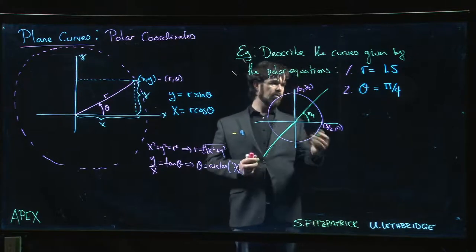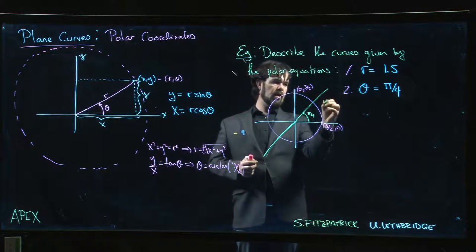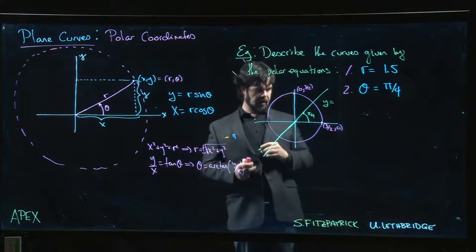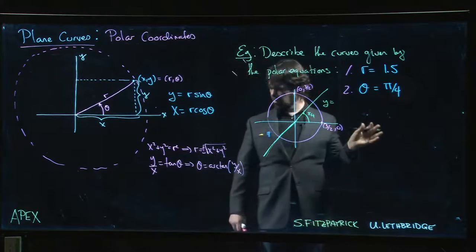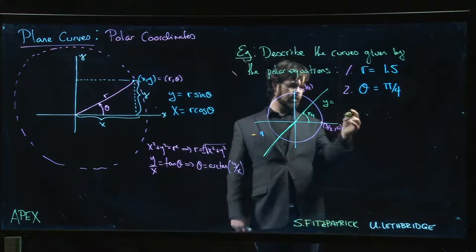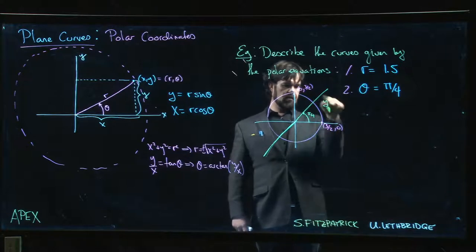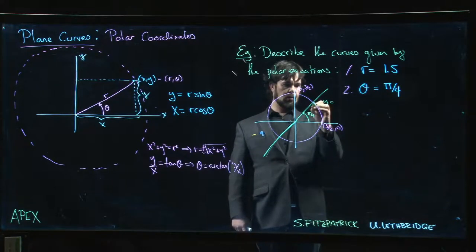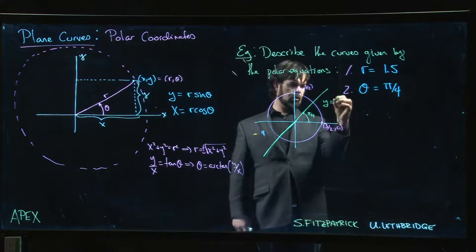So line through the origin. And if we wanted to get it into rectangular form, well we actually saw this when we were looking at parametric equations. If you describe a curve parametrically, a line through the origin that intersects the circle at a point giving you a given angle, the slope is tan(theta).